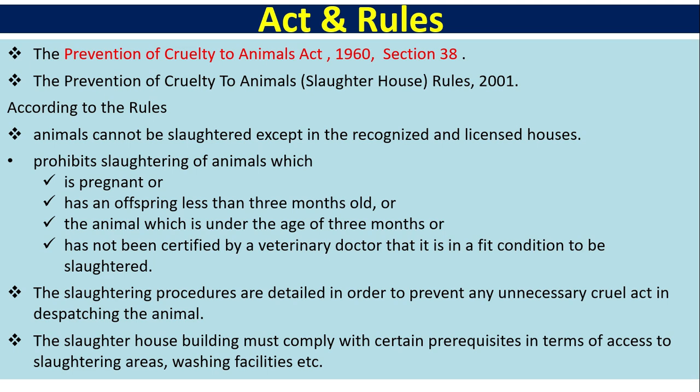The Prevention of Cruelty to Animals Act of 1960, Section 38 — the Prevention of Cruelty to Animals (Slaughterhouse) Rules — states that animals cannot be slaughtered except in recognized and licensed houses. It prohibits slaughtering of animals that are pregnant, have an offspring less than three months old, are under three months of age, or have not been certified by a veterinary doctor as fit for slaughter. Slaughtering procedures are detailed to prevent unnecessary cruel acts, and slaughterhouse buildings must comply with prerequisites regarding access, washing facilities, etc.